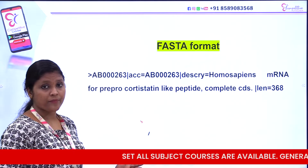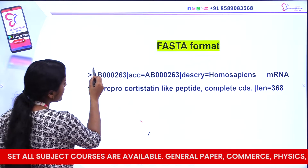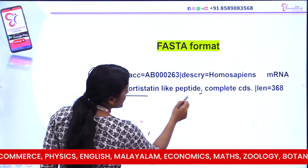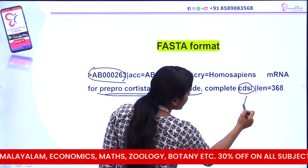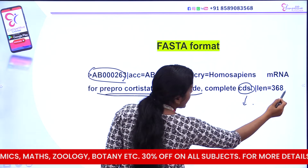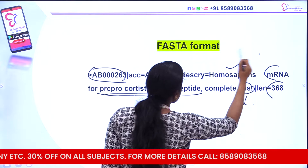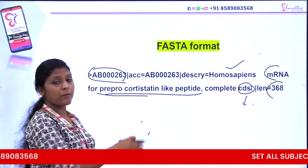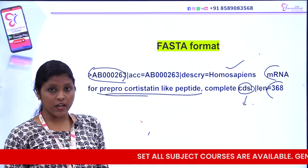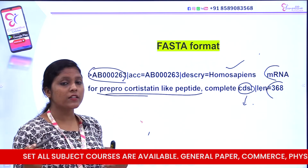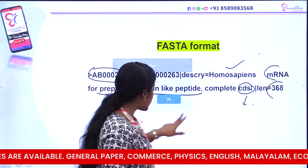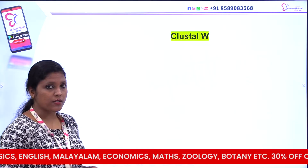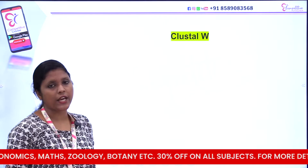This is the FASTA format. This is AB00263. This is for Prepro-Cortistatin-like peptide, complete CDS. You can read the annotation from the sequence. He has a way to translate the lines — this is the annotation precisely here. If you place a name, there is a gap in the alignment.